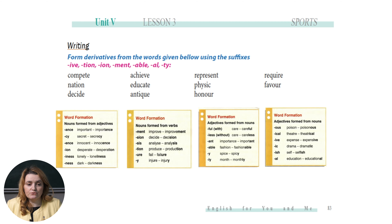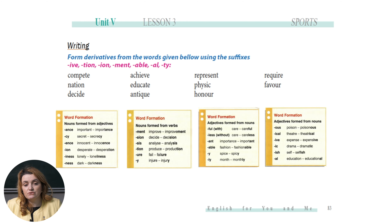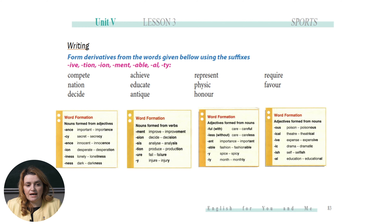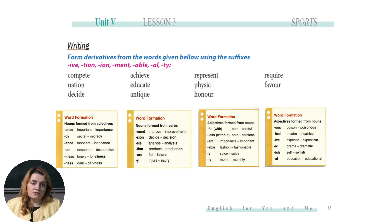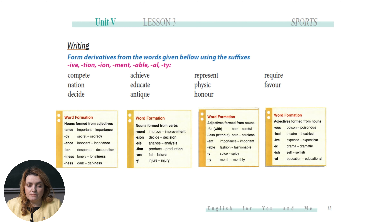Another activity for you. This time, we have to form derivatives from the words given below using the suffixes — you can see the suffixes in pink. But before I let you practice on your own, let us have a look at the word formation examples I have prepared. I want you to understand that we form nouns from adjectives, nouns from verbs, and adjectives from nouns. You have the examples below.